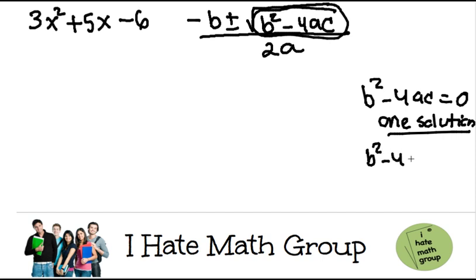If b squared minus 4ac is greater than zero, that means you're going to have two real solutions.